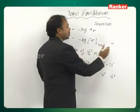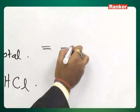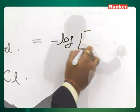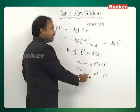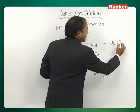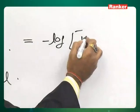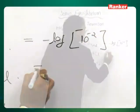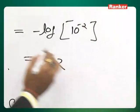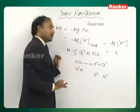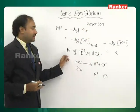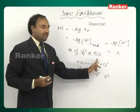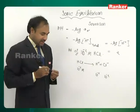As per the formula, pH = -log[H⁺] = -log(10⁻²), which gives pH = 2. So the pH of a 10⁻² molar HCl solution is 2.